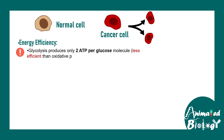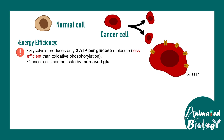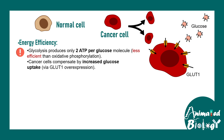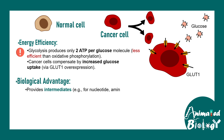First of all, glycolysis produces only two ATP molecules, which is less efficient than oxidative phosphorylation. But in order to optimize this, the cancer cell upregulates glucose uptake — several GLUT1 transporters are upregulated in the cancer cell — which brings in more and more glucose, ensuring more and more energy can be produced.